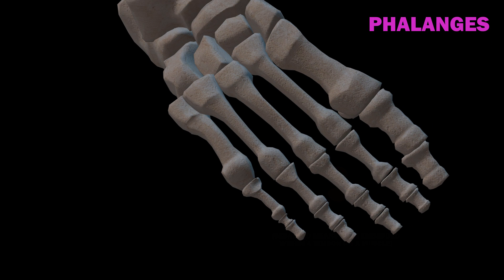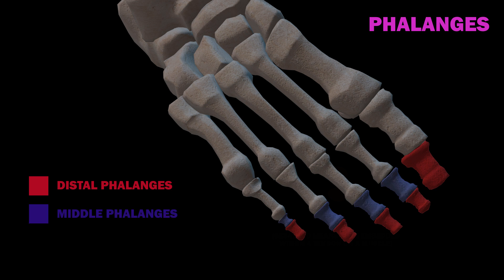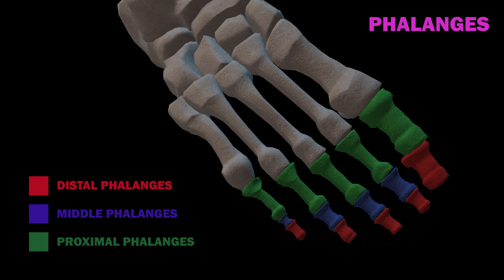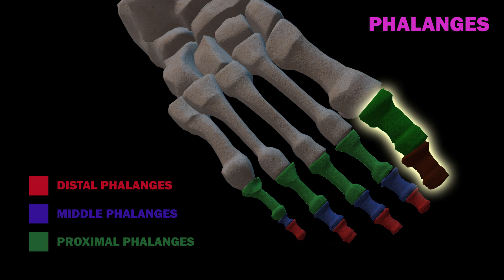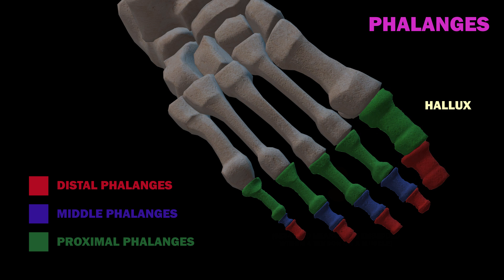The phalanges can further be grouped into three categories: the distal phalanges, which are the most distant from the center of your body, the middle phalanges, and the proximal phalanges. Note that your big toe does not have a middle phalanx bone. The big toe is also called the hallux. With only the distal and proximal phalanx bones, the big toe only has one joint, called the interphalangeal joint.